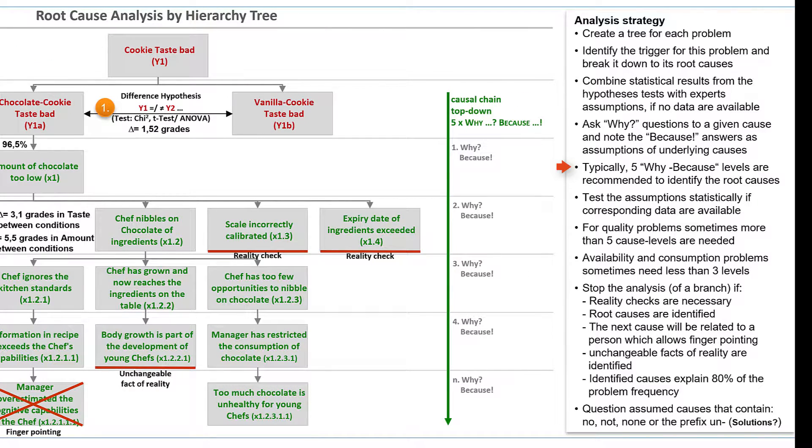The standard recommendation to ask five why-questions in a cascade to advance to the root causes is basically sensible for the associated solutions to be effective. However, I would not make them mandatory, because there are causes that first should be checked in reality before they are assumed as true, for example the wrong calibrated scale.